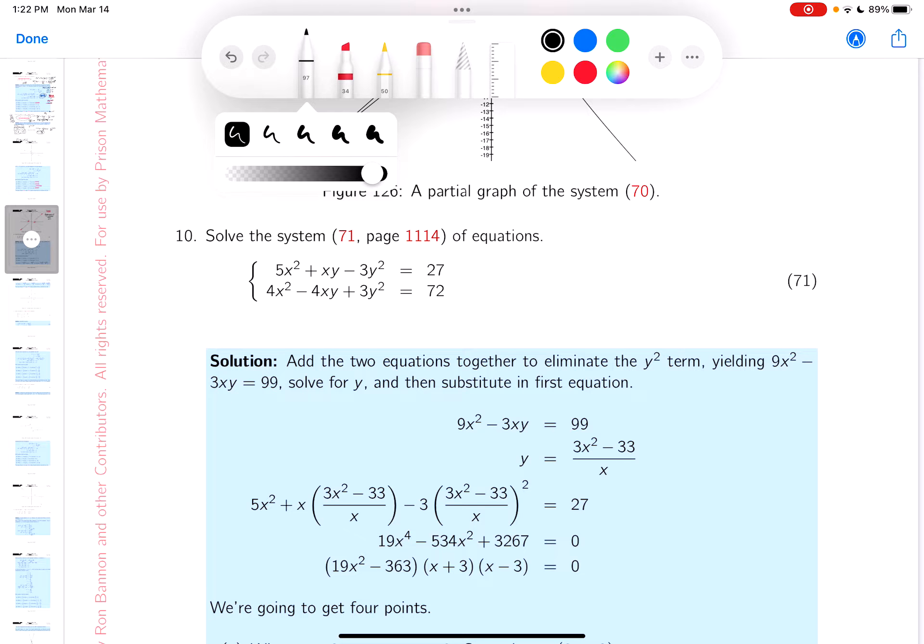If you looked at 27, I would say it's 9 times 3. And if you look at 72, that would be 9 times 8.